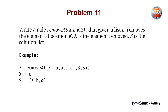Write a rule with the name of removeAt that given four arguments — L is the list given — this rule removes the element at position K. We have two output variables: the first one is X, which is the element removed, and the second one is S, where S is the solution list, which is basically the list after removing this element.